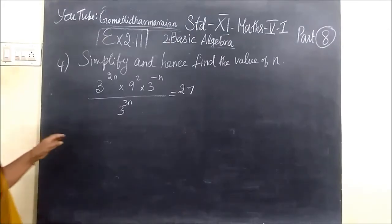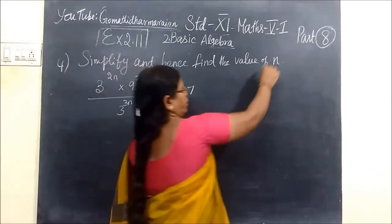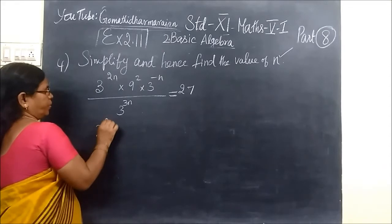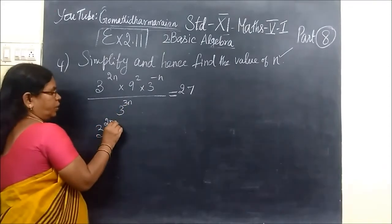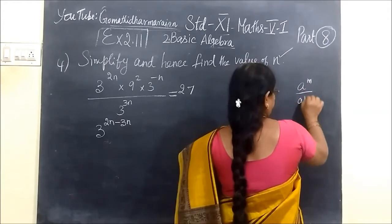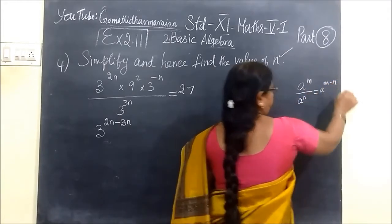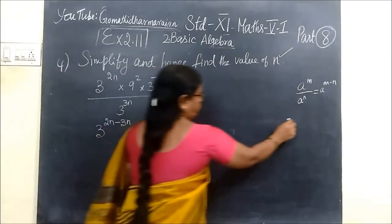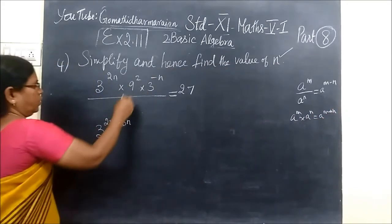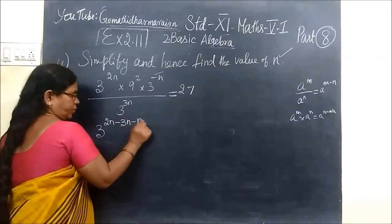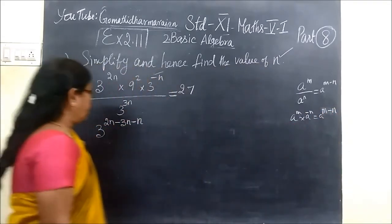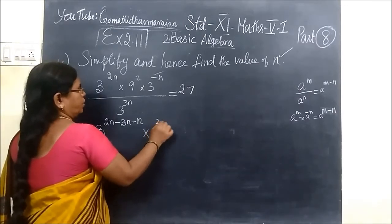Now we want to see the fourth sum. Here you have to find the value of n. So both sides: 3^(2n) · 3^n in the numerator. Using a^m / a^n = a^(m-n) and a^m · a^n = a^(m+n), we simplify. 9 can be written as 3², so this is equal to 3^(2n + 2).